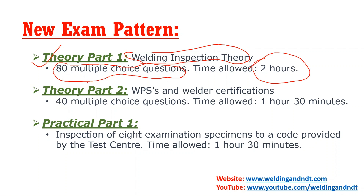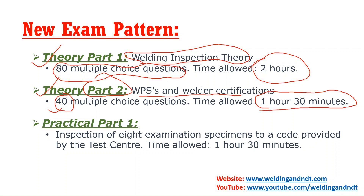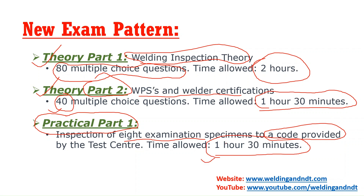Theory Part 2 covers questions related to WPS and welder certifications, containing 40 multiple choice objective type questions with a time allotment of 1 hour and 30 minutes — that is 90 minutes. The third paper is Practical Part 1, where you have to inspect 8 examination specimens to a code that will be provided in the exam. The time allotted for the practical is also 90 minutes. So in total you have two theory parts and one practical part.